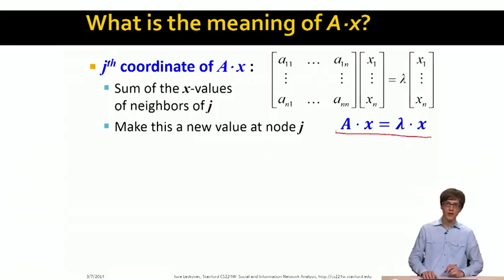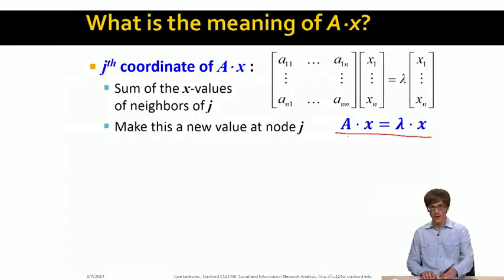We have already talked about eigenvalues and eigenvectors, and here is a definition of an eigenvalue problem. So basically we are saying that eigenvector and the corresponding eigenvalue are a solution to the equation of A times x equals lambda x.